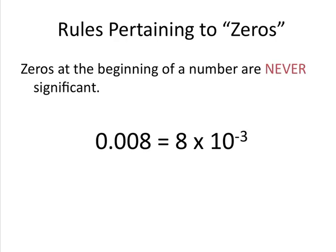Zeros at the beginning of a number are placeholders, and sometimes people get confused with this concept. If this concept seems confusing to you, think about writing out the number in scientific notation. If we write the number in scientific notation, you can see that we don't need to include any zeros at the beginning of the number. Therefore, those zeros are just placeholders and not significant numbers in our value.